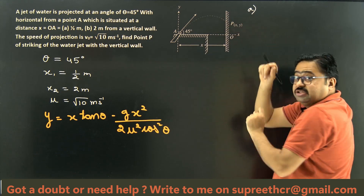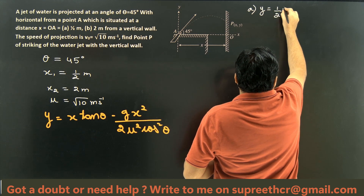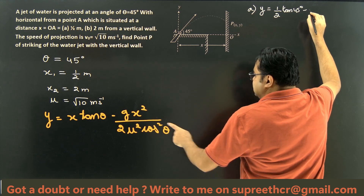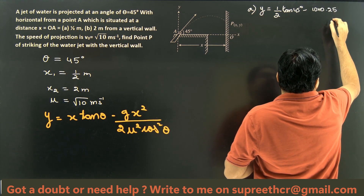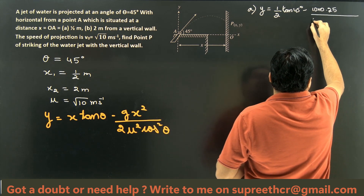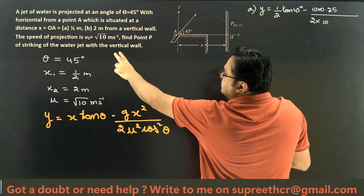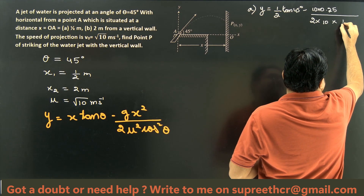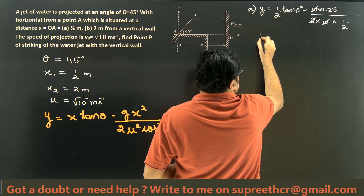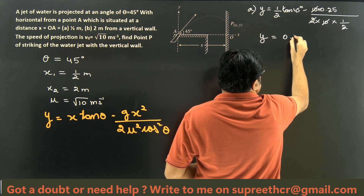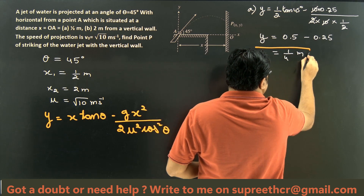The Y coordinate is where the water jet strikes when X equals half a meter. Substituting: Y equals (0.5)·tan(45°) minus G·(0.5²) divided by 2·U²·cos²(45°). G is approximately 10, X² is 0.25, U is root 10 so U² is 10, and cos(45°) = 1/√2 so cos²(45°) = 1/2. The 2s and 10s cancel. Tan(45°) is 1, so Y equals 1×(1/2) minus 0.25, which gives 0.5 minus 0.25, equal to 1/4 meter.